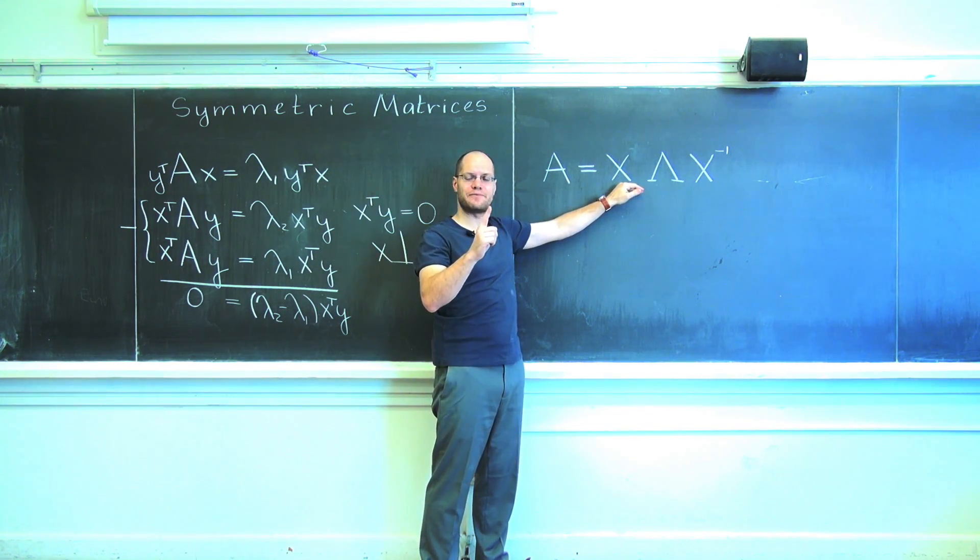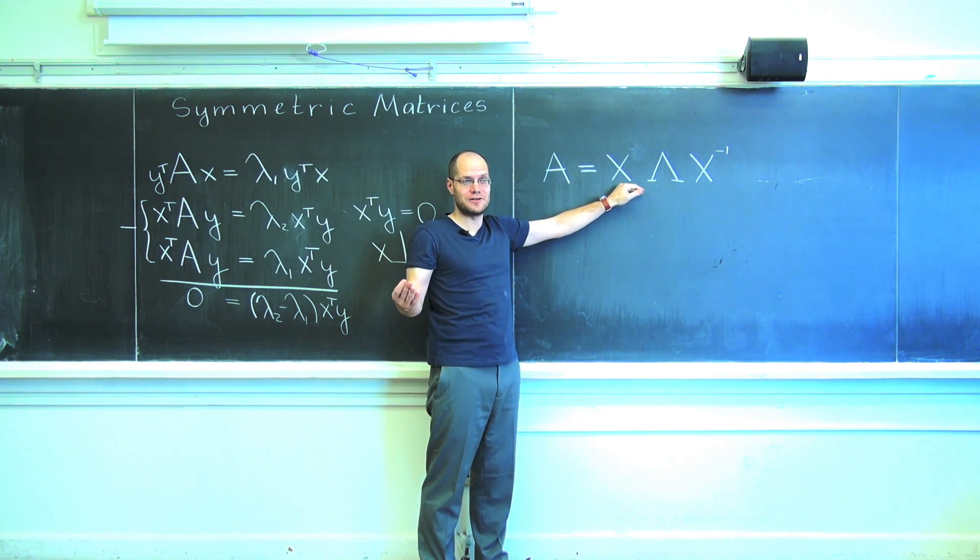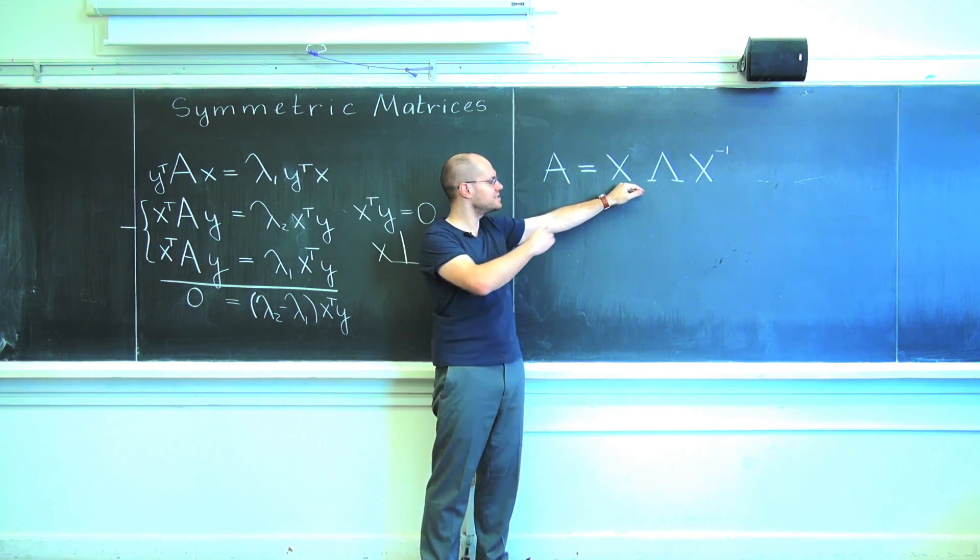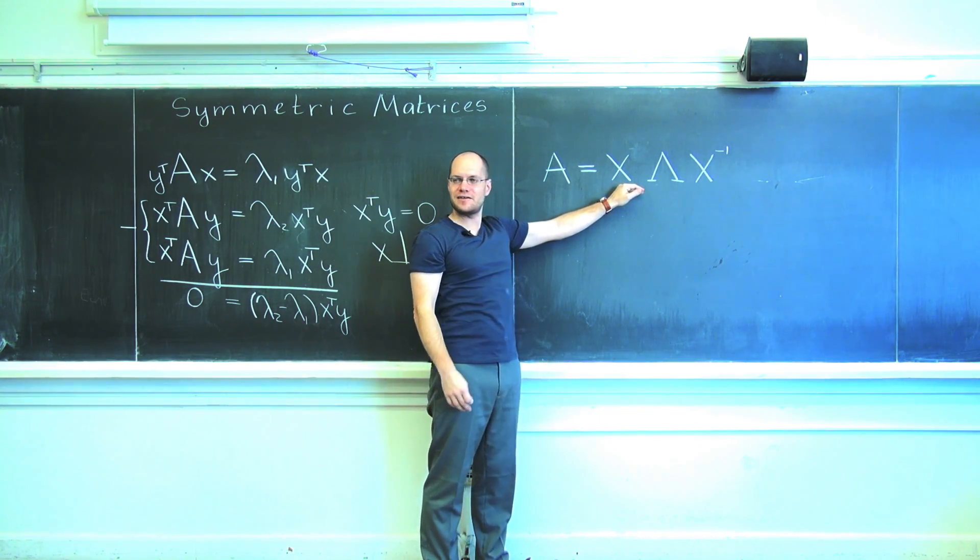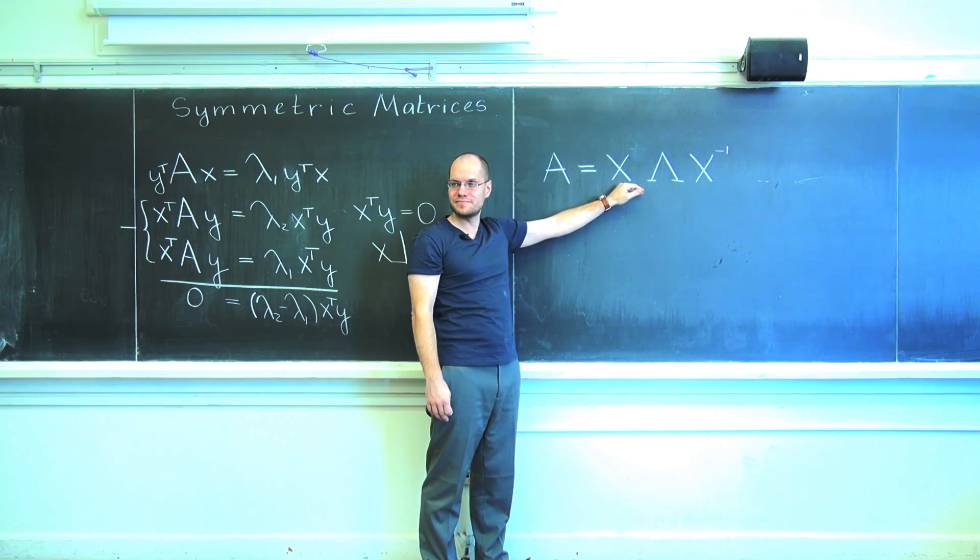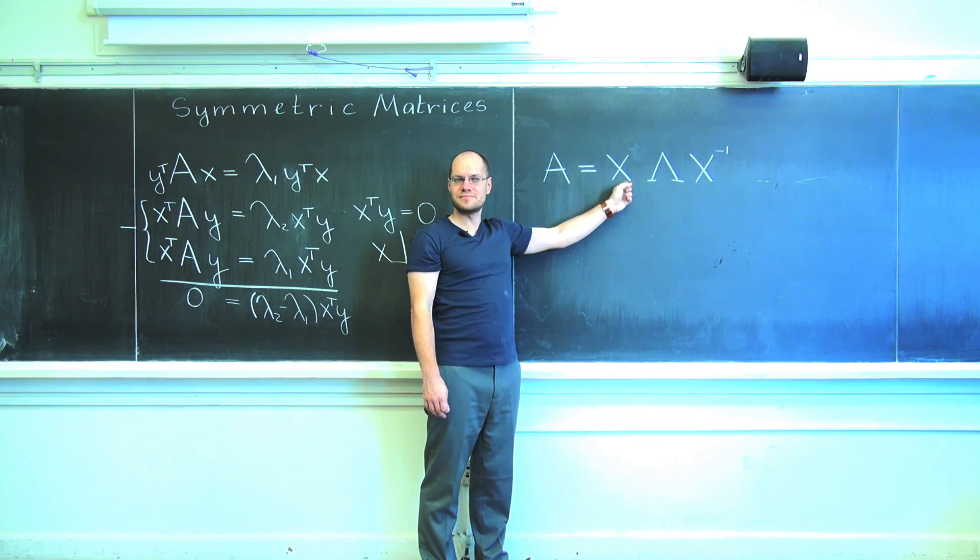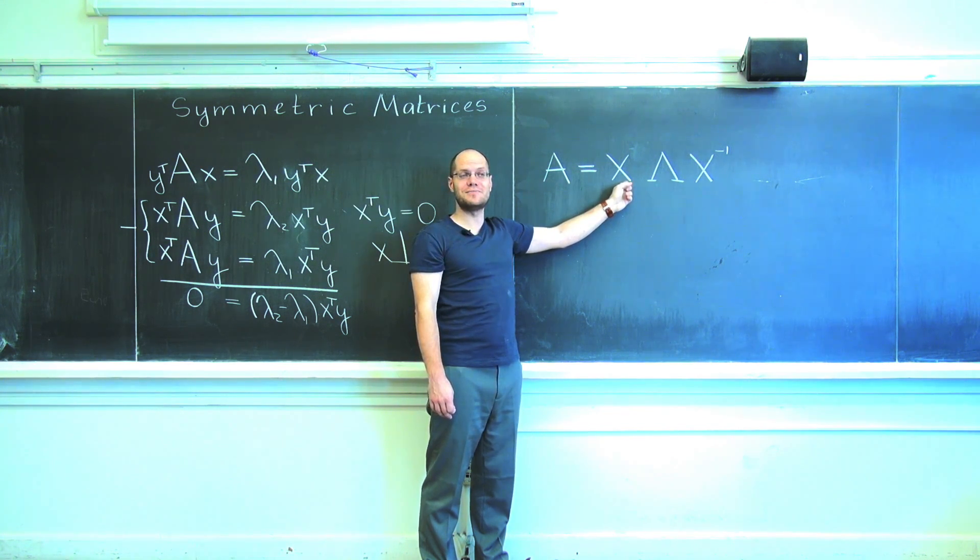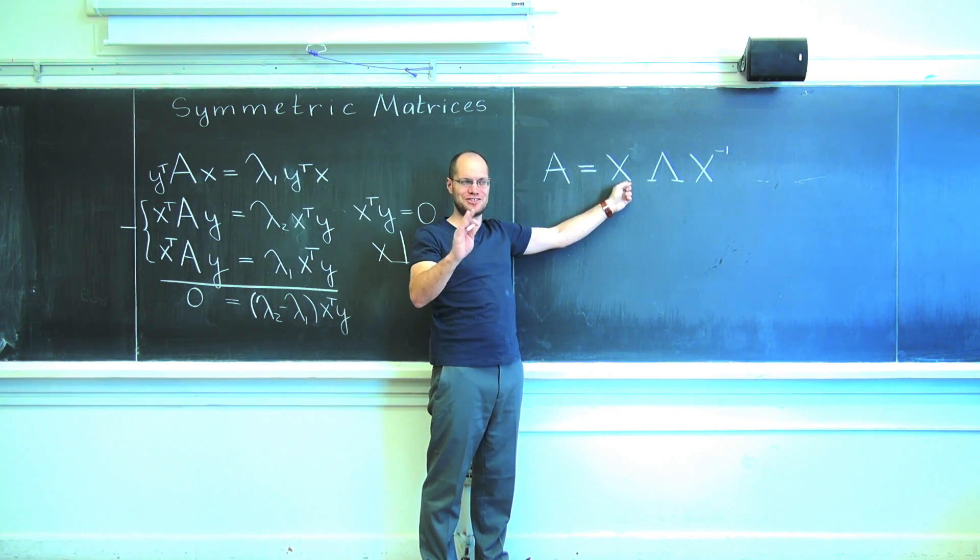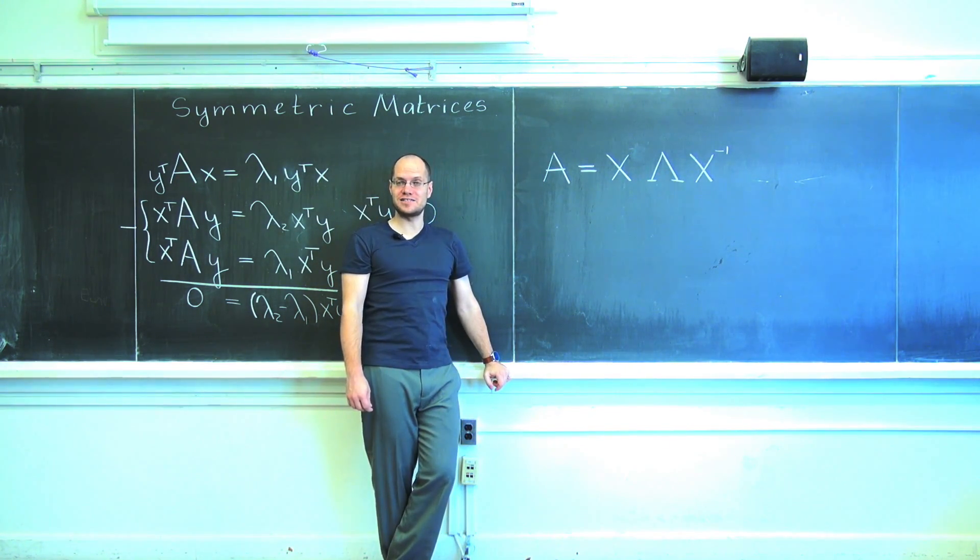And now let's go a step further and choose them to be orthonormal, right? I can normalize them, right, make them all unit length. So that's the form of the eigenvalue decomposition that I'm considering right now. Our columns are now orthonormal. That makes the matrix X what? Orthogonal. And for an orthogonal matrix, yes, bad terminology, good property, what is the inverse? It is its transpose.